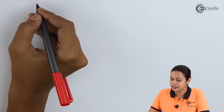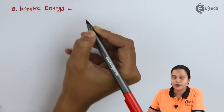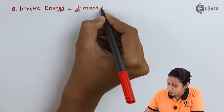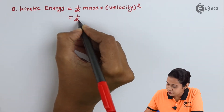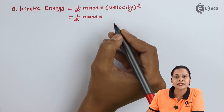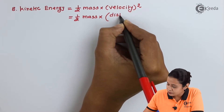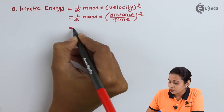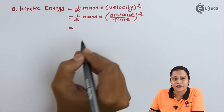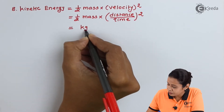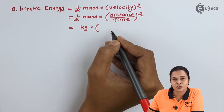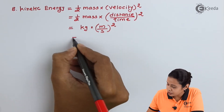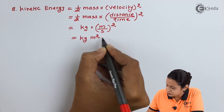The next physical quantity we will take is kinetic energy. Kinetic energy is equal to half mv squared, that is half mass into velocity squared. We can express velocity as distance per unit time. The constant half has no unit. So the unit is kg into meter squared upon second squared, giving kg meter square per second square.